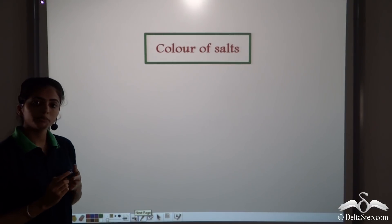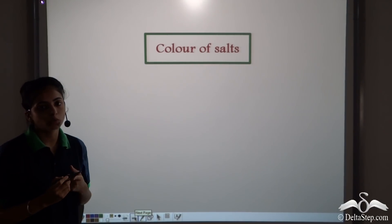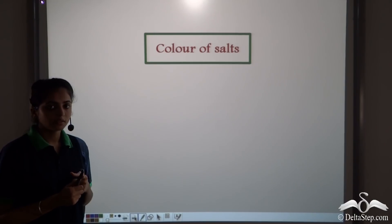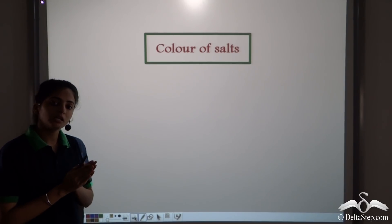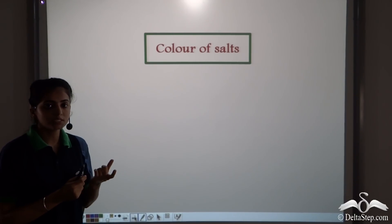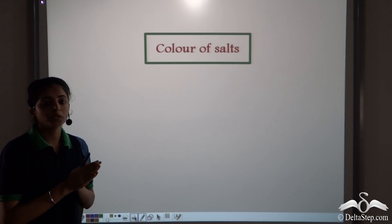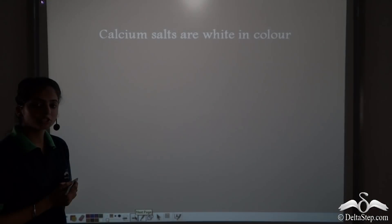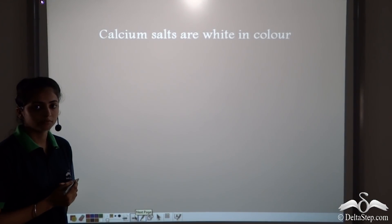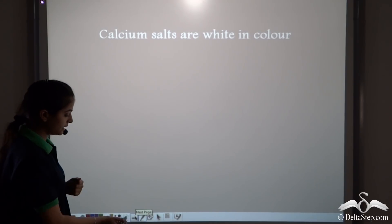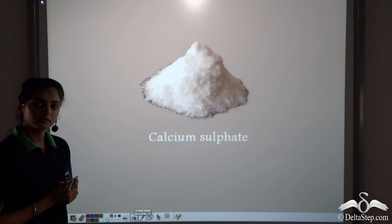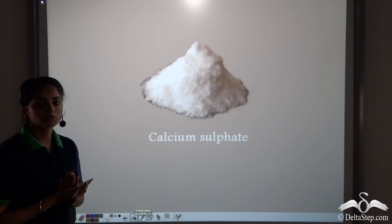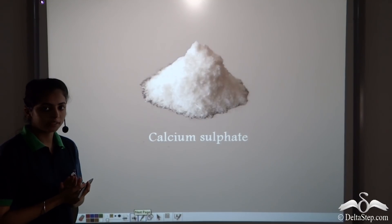We will start with the colour of salts. This helps in the qualitative analysis. Most metallic salts, like a particular metal, when it forms salts, it has a particular colour. For example, calcium salts — they are white in colour. So if we take calcium sulphate, it is a white salt. So all calcium salts are white in colour.